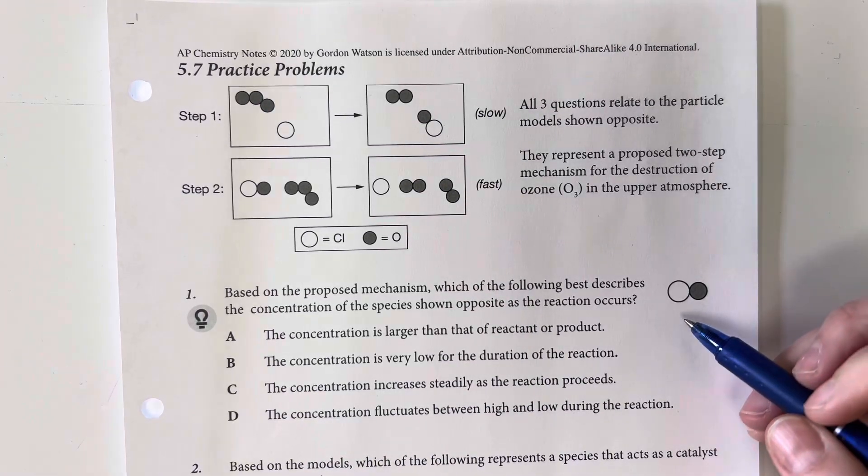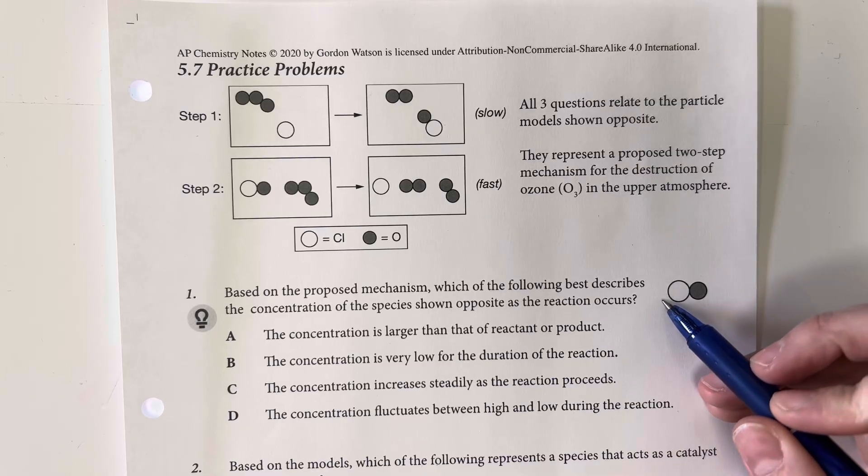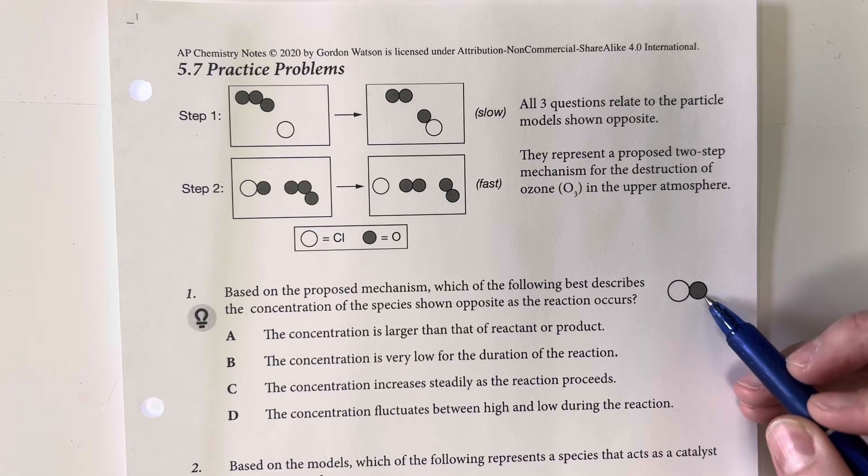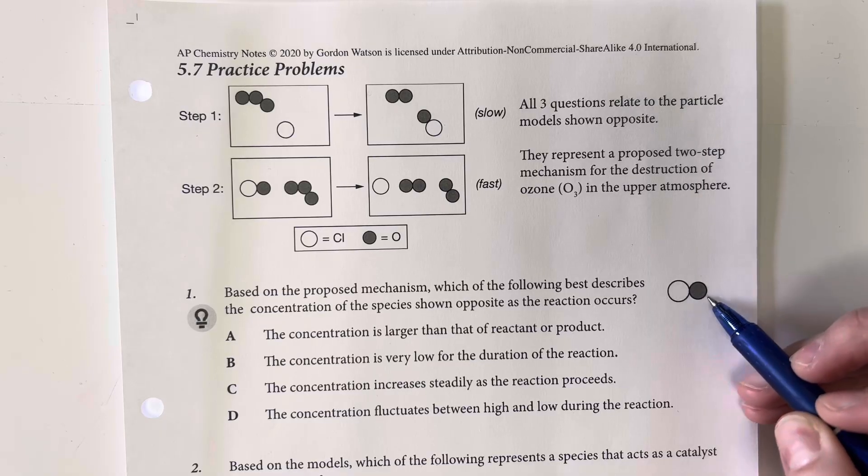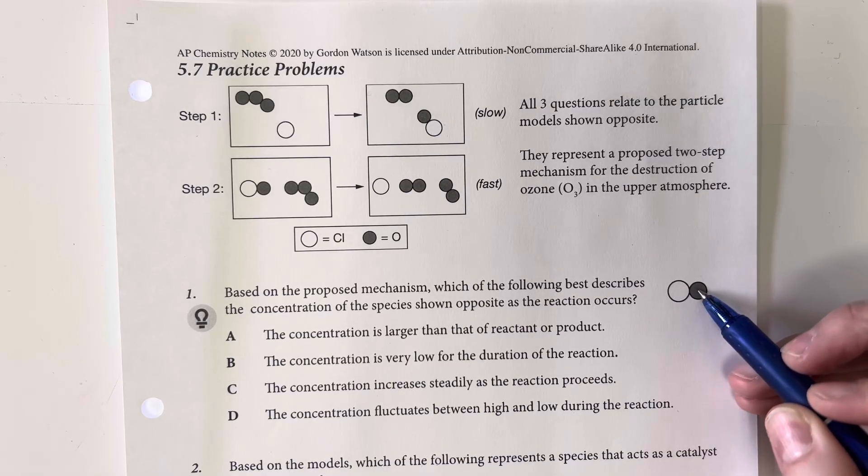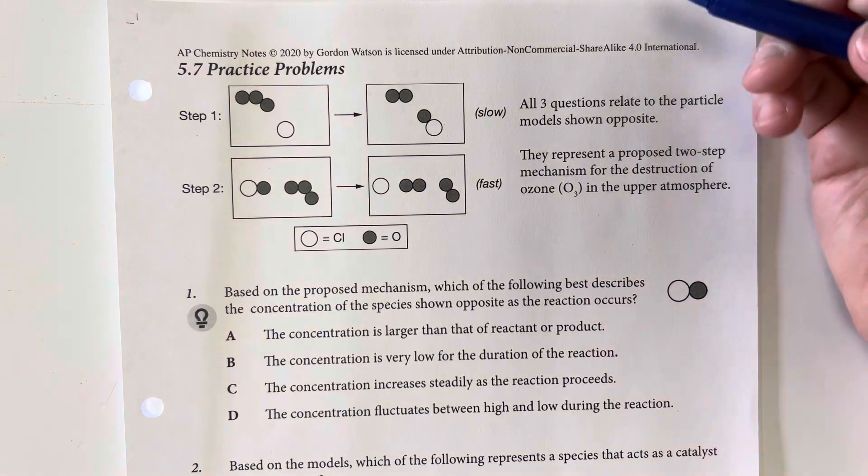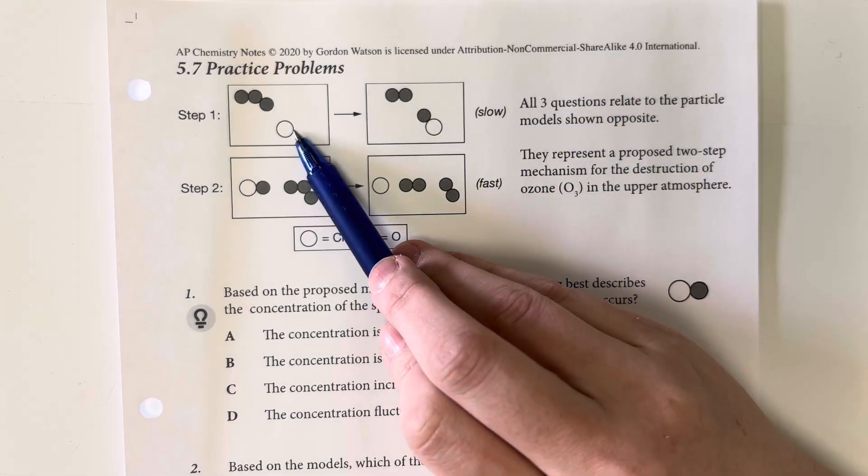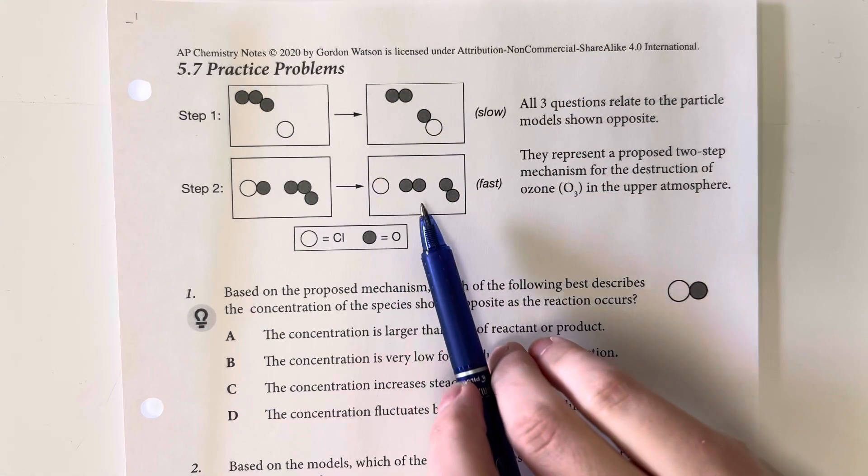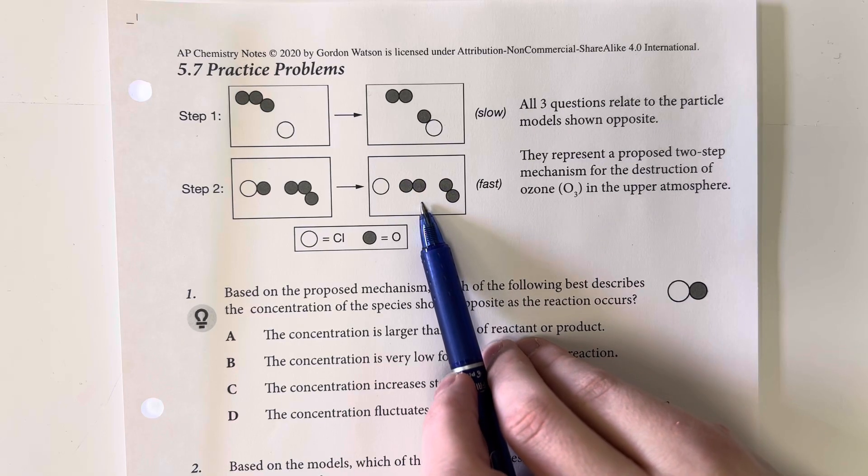So the species shown opposite, we have the large white circle and the medium-sized dark circle. And we can see that at the very first step, it does not exist, and at the very last step, it does not exist.